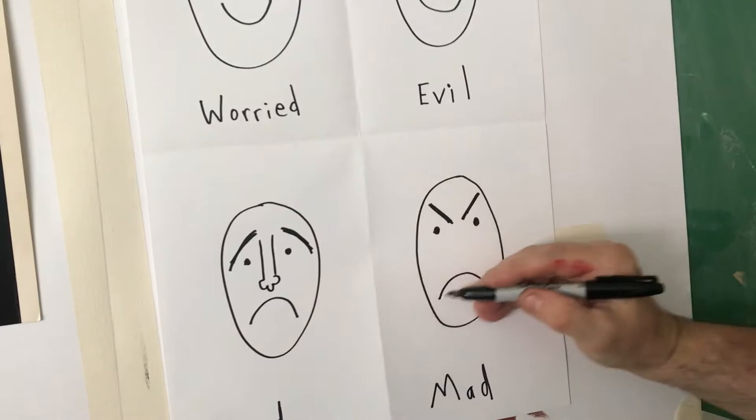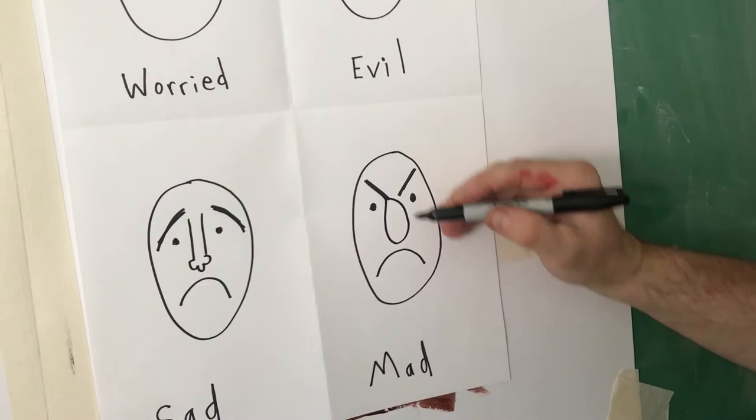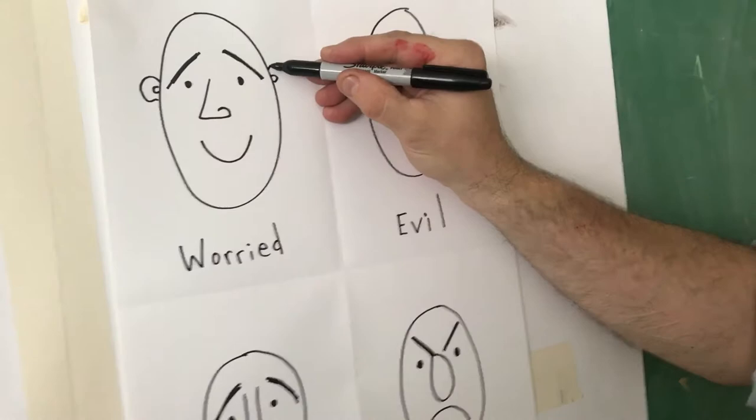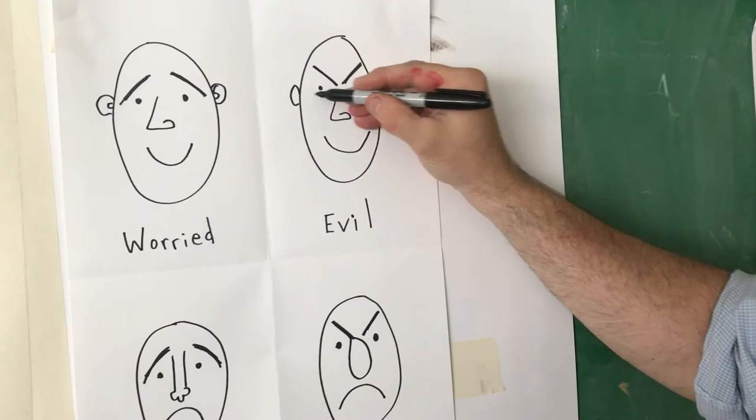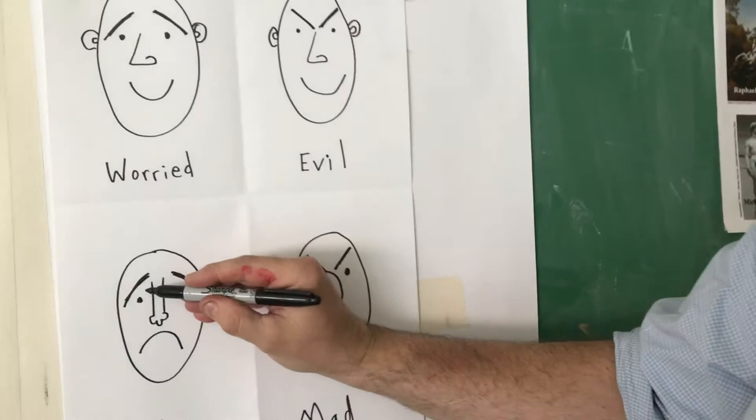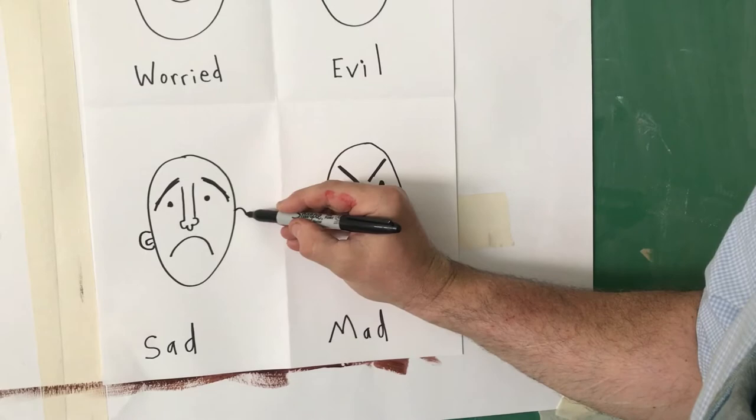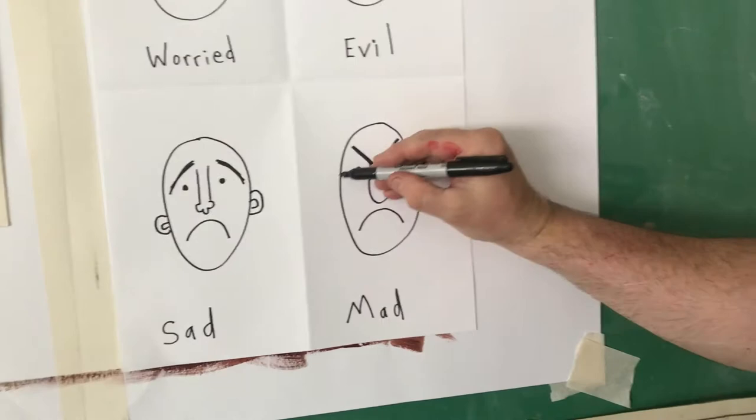Now we'll come back to our drawing and practice making different kinds of faces. I'm going to finish these two noses — try to use a different shape for each nose. Now I'm going to add ears. Your ears should be about even with your eyes — on most people, maybe slightly lower. If you put the ears way down low, it looks pretty weird, like the person is looking up.